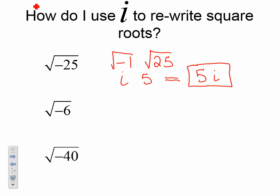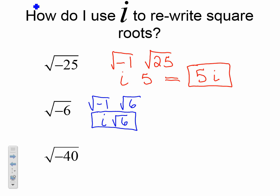We can do the same thing for square root of negative 6. Break it down: we have the square root of negative 1 times the square root of 6. We know the square root of negative 1 is i. Now, the square root of 6 — there are no perfect squares that go into 6, so we just leave it as square root of 6. Our answer is i times the square root of 6.